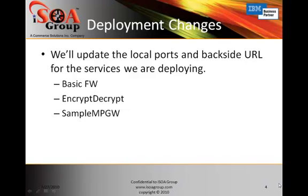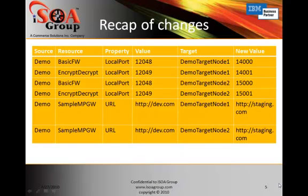We also created a deployment policy where we updated the ports and the backside URL for our three services. Here's a recap of the changes: we'll be changing the local port from 12,048 for the Basic Firewall to 14,000. We'll do the same thing with Encrypt-Decrypt, changing it from 12,049 to 14,001. For Sample-MPGW, we're going to be changing the backside URL from dev.com to staging.com.